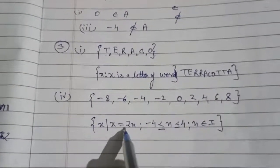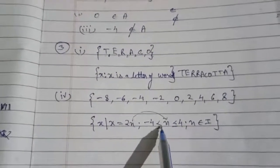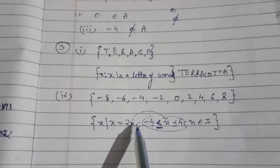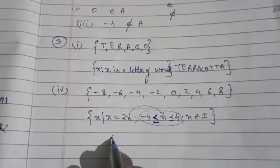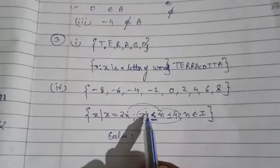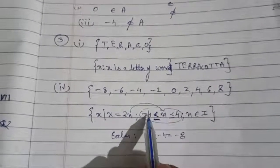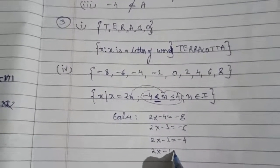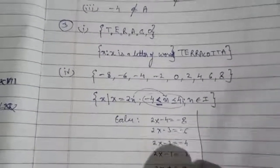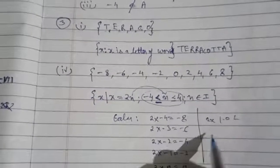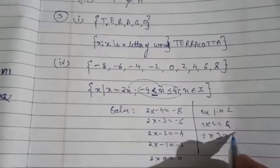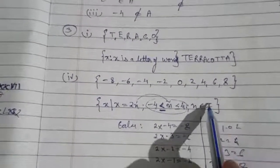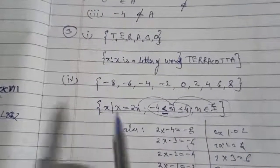Let me explain again: x = 2n, and n's value is restricted — n ≥ -4 and n ≤ 4. Take n = -4: 2 × (-4) = -8. Take n = -3: 2 × (-3) = -6. n = -2: 2 × (-2) = -4. n = -1: 2 × (-1) = -2. n = 0: 2 × 0 = 0. n = 1: 2. n = 2: 4. n = 3: 6. n = 4: 8. So all answers have come: -8, -6, -4, -2, 0, 2, 4, 6, 8, and n ∈ Z.